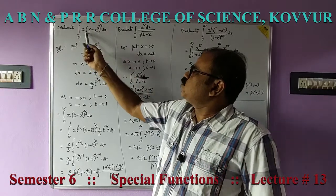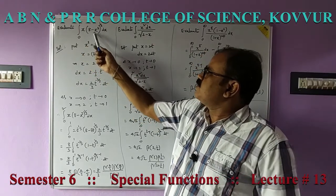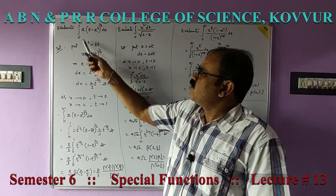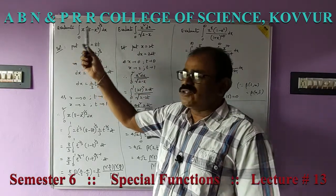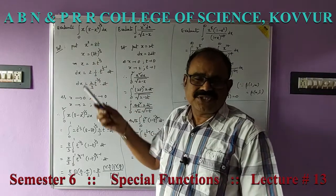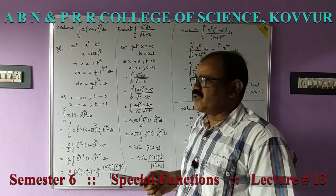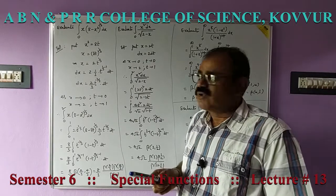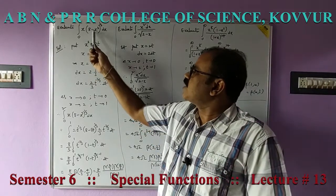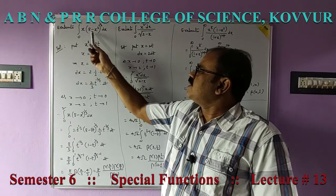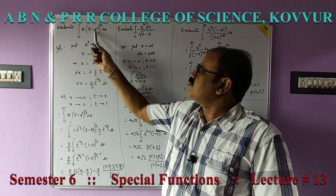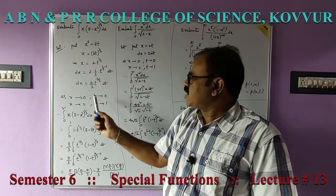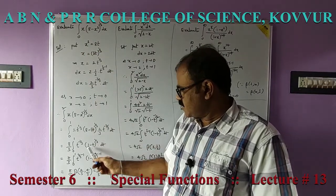Evaluate integral 0 to 2 of x times (8 minus x³)^(1/3) dx. We have to convert this into the traditional beta function: integral 0 to 1 of x^(l−1) times (1−x)^(m−1) dx. For this, we take the substitution: in place of x³, take 8t — because 8 minus 8t, in which 8 can be taken out as common, giving you 1 minus t.